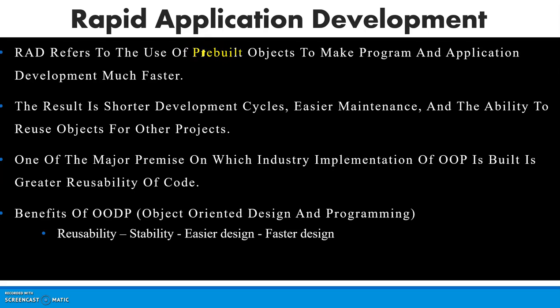Basically, we use pre-built objects — like a timer, some grids, and other components. There are many pre-built objects we will use to make program and application development much faster. This is the concept of reusability, meaning something is already there — it might be system-defined or already developed.